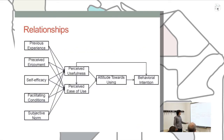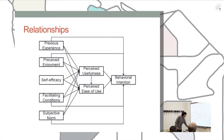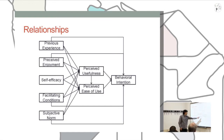We originally proposed a scheme where the five constructs are related to perceived usefulness and perceived ease of use, with the rest following Davis's original model. But after reviewing the literature on relationships, we developed a refined model where we maintain the five external constructs and their relationships with perceived usefulness and perceived ease of use, we eliminated the concept of attitude toward use as recommended by some authors, and we also linked prior experience, enjoyment, facilitating conditions, and subjective norm directly to behavioral intention, in order to increase the explanation of actual use.